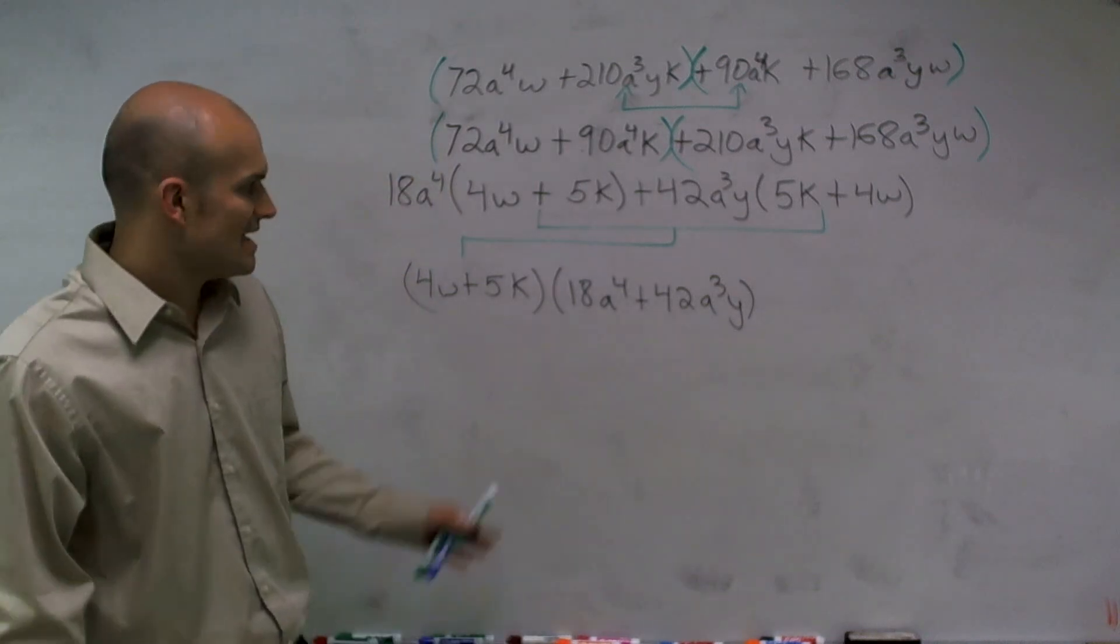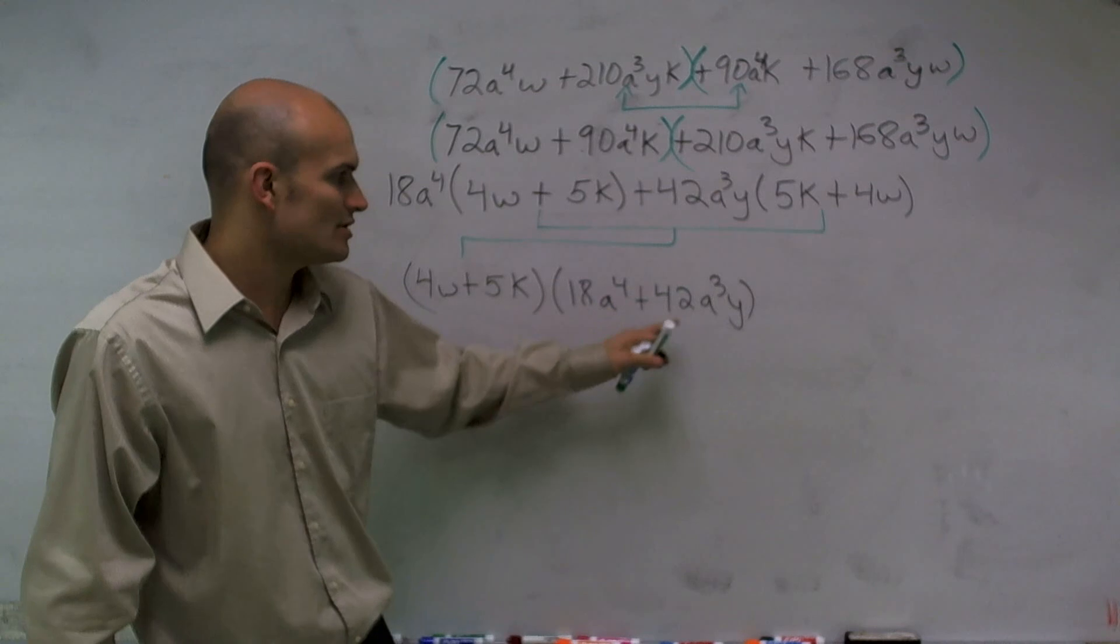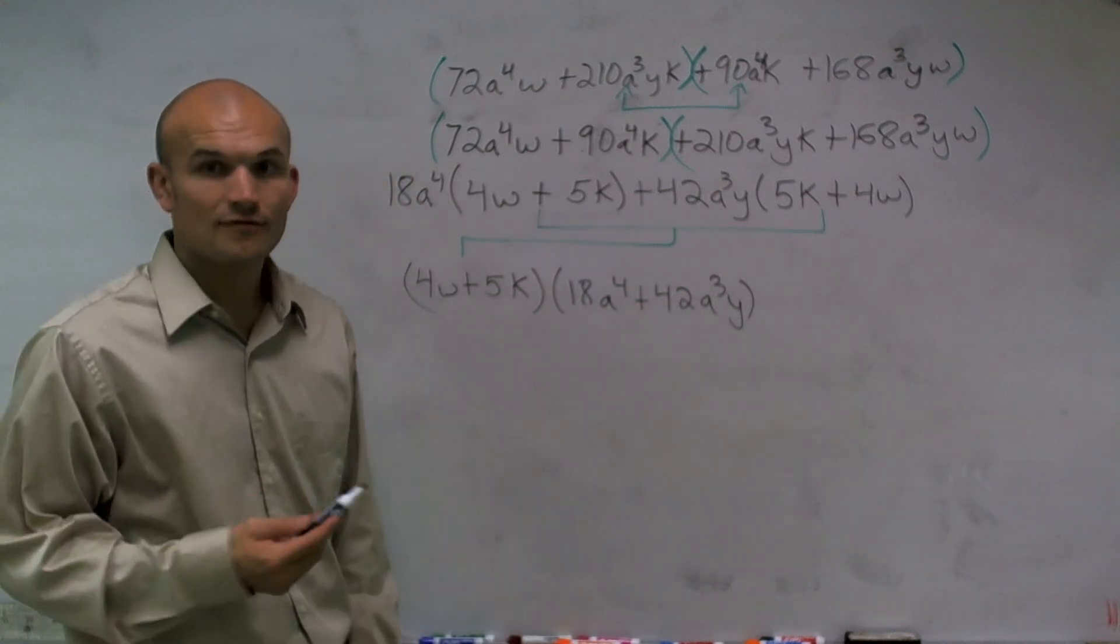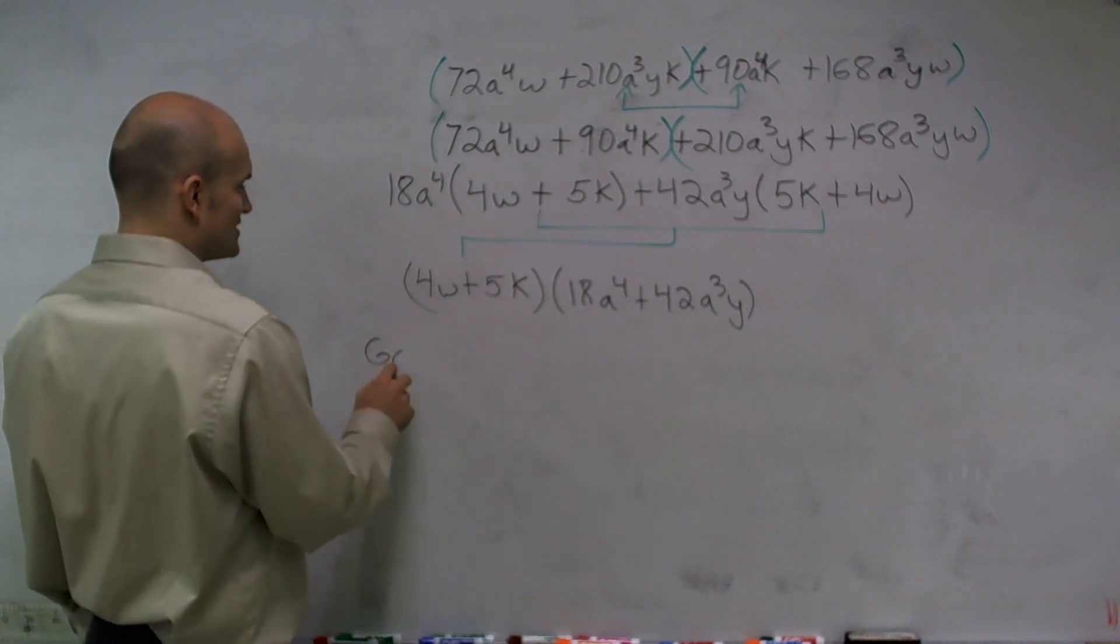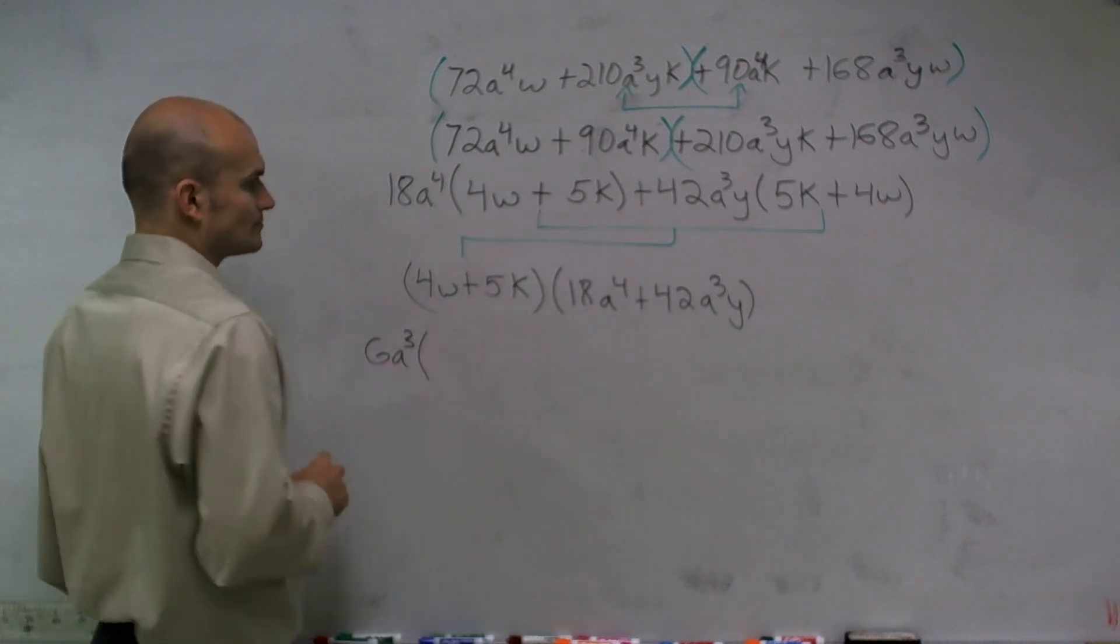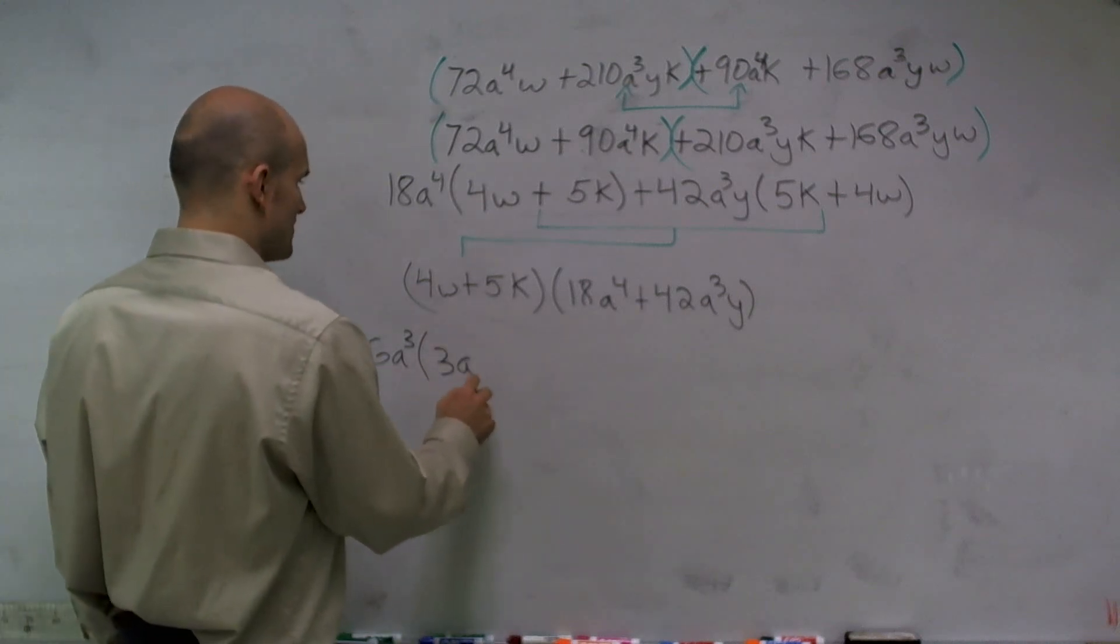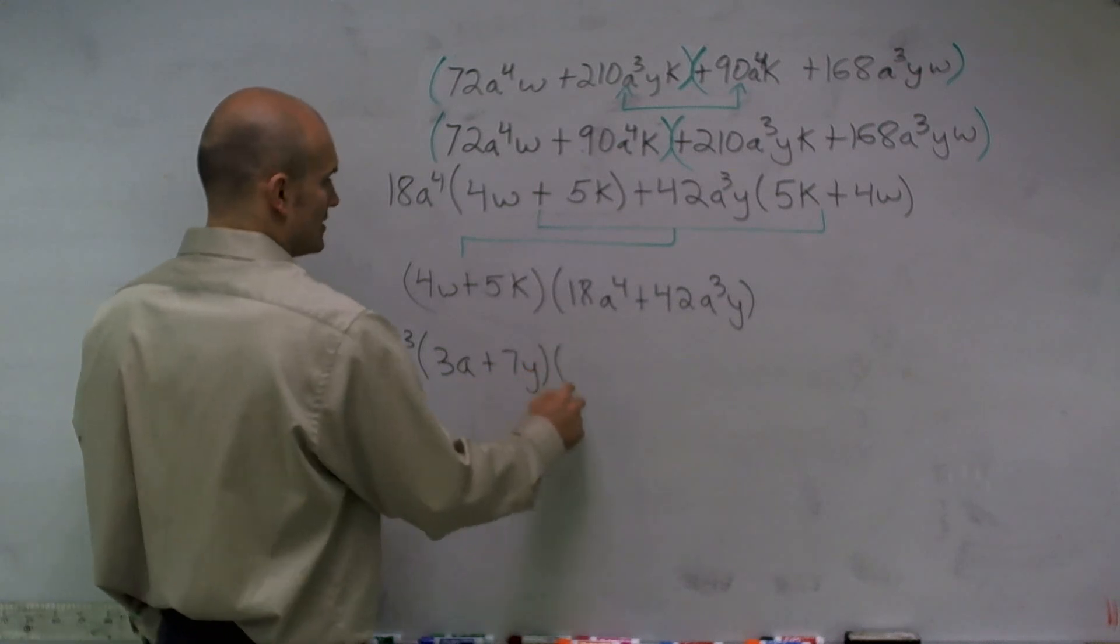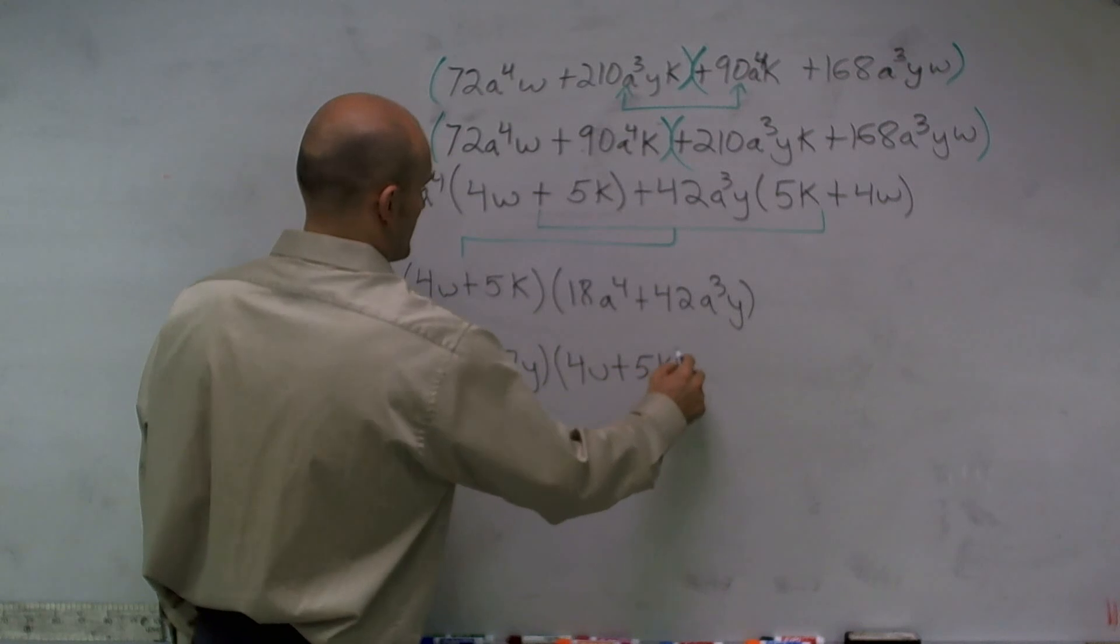So I'm left with (4w + 5k) times (18a⁴ + 42a³y). Now, it's important for you to understand that I can factor out again out of these two terms, so I can factor this even further. So my final answer for the problem is, I can factor out 6a³, which will leave me with (4w + 5k)(3a + 7y)(6a³).